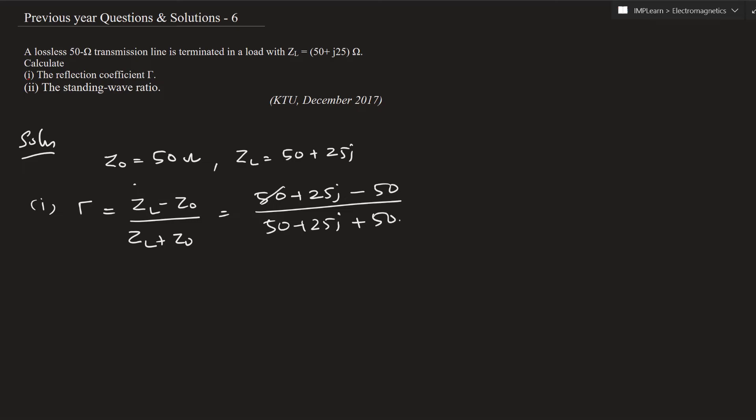So the 50s cancel out, which equals 25j divided by 100 plus 25j. This is calculated as 0.058 plus 0.23j.